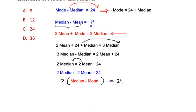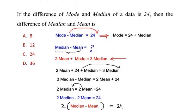So we get it as 24 divided by 2, which gives us a value of 12, which is our option B.